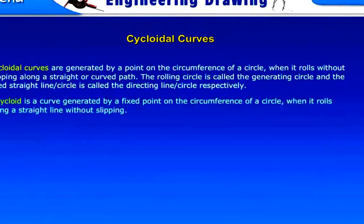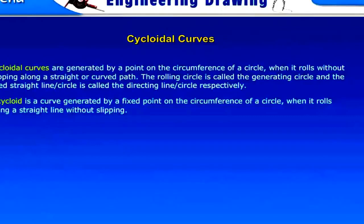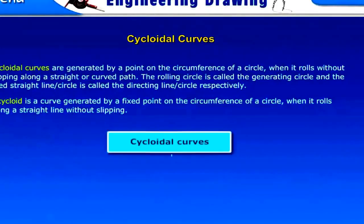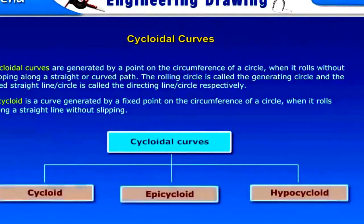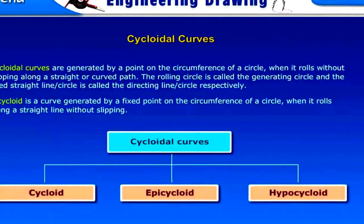A cycloid is a curve generated by a fixed point on the circumference of a circle when it rolls along a straight line without slipping. Types of cycloidal curves: cycloid, epicycloid, and hypocycloid.